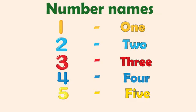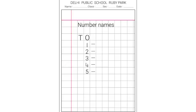Now let us look at the fun sheet. In the fun sheet, you will have to write your name, your class, section, and the date. And then the heading is there — Number Names. N-U-M-B-E-R, Number, N-A-M-E-S.